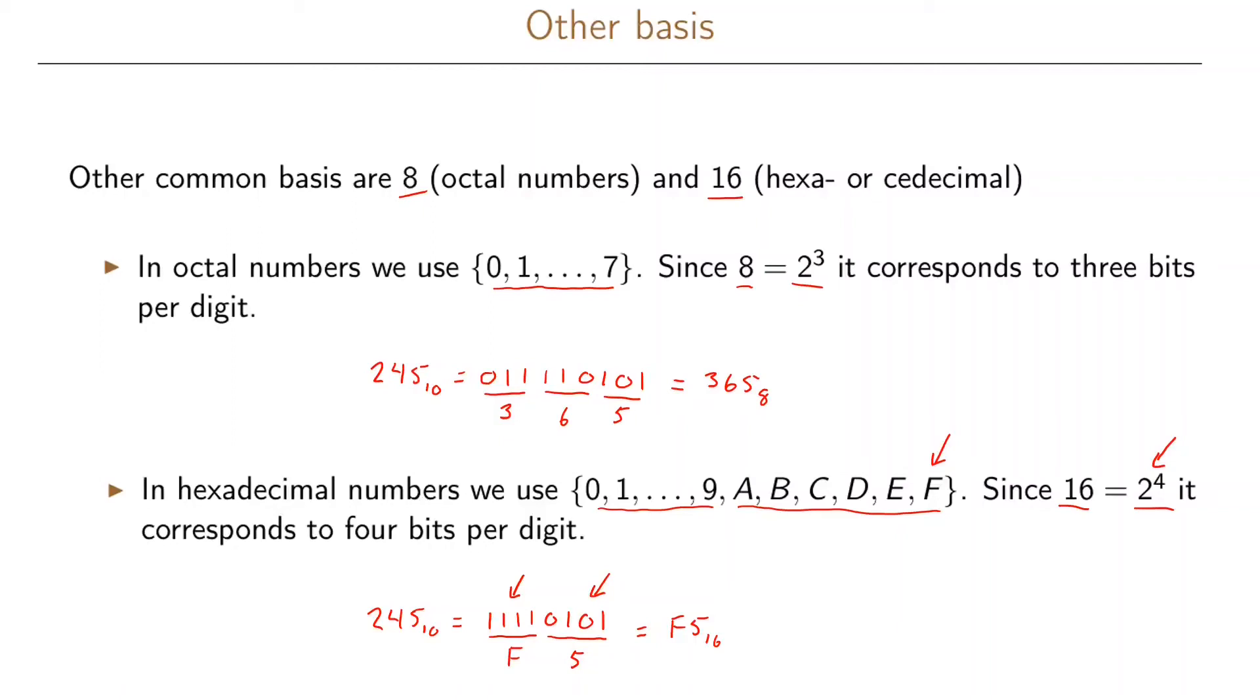So as you can see the main reason for writing it in octal or hexadecimal notation is that we have a more compact representation of our binary numbers so instead of using here eight different digits we instead use only two and in the octal case we use instead three digits to represent the numbers. And the reason why 10 is not so convenient to use as a base is that 10 is not the power of 2 so we cannot group our binary digits in this way as we can in the octal and hexadecimal numbers.